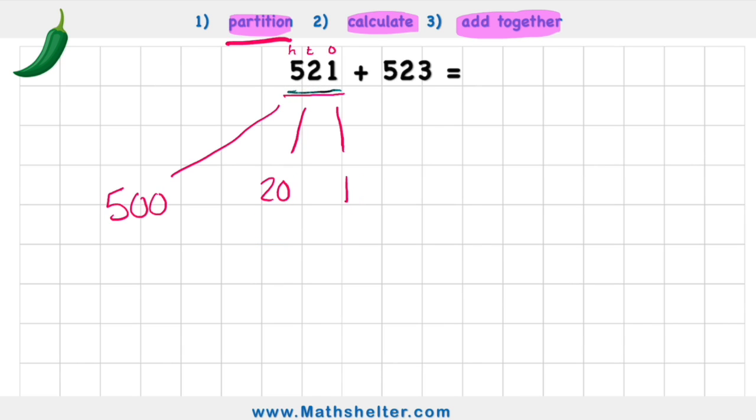And as a partitioned number, it's much easier to work with when I'm doing mental calculations. So let's see what that looks like with the other example as well. I have 523. Again, 3 1's, 2 10's, 5 100's.